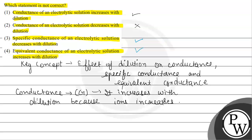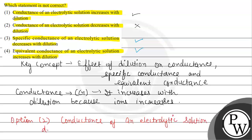So, the fourth option — equivalent conductance of an electrolyte solution increases with dilution — is correct. According to the question, we had to find the wrong statement, which is option second: conductance of an electrolytic solution decreases with dilution. So we mark option second as the final answer of this question. Hope you understood it well, best of luck.